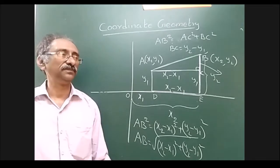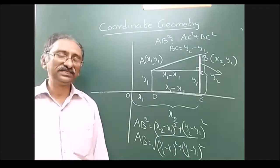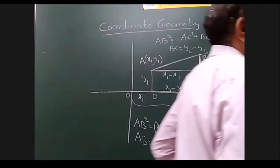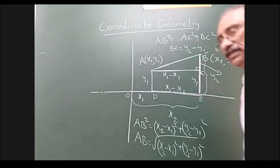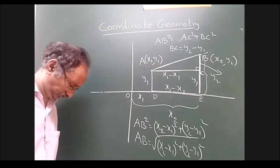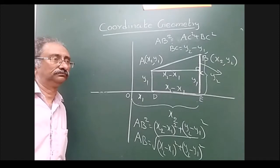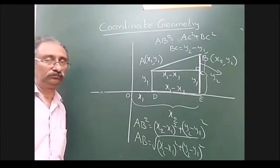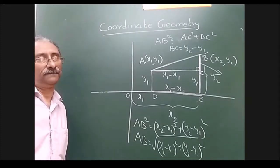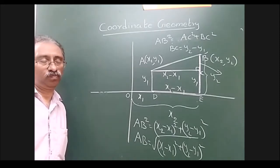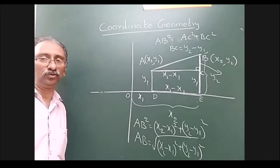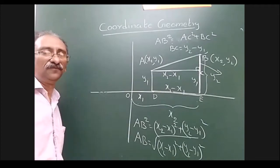This length is y2 and this length is y1, so BC = y2 − y1. Similarly, from origin to E is x2 and from origin to D is x1, so AC = x2 − x1. Therefore AB² = (x2 − x1)² + (y2 − y1)², and we get the important formula: AB = √((x2 − x1)² + (y2 − y1)²).